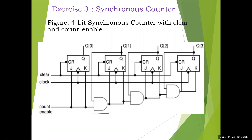You can search any logic design book for how this design came about — that is not the point of interest here. You can refer to any design for a synchronous counter with clear and count enable using master-slave JK flip-flops. We have done this already in logic design. There are 4 master-slave JK flip-flops and 3 AND gates. Count enable and Q[0] are ANDed for the next J and K inputs. For the first flip-flop, count enable only is given. Then the output and Q[1] are ANDed, given to the next JK. And then that output and Q[2] are given as J and K inputs to the last flip-flop.